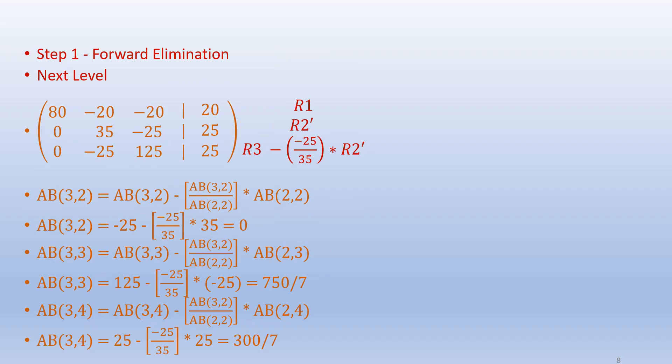In the next level, we want to bring the elements under the second column below the main diagonal to zero. In order to achieve this, we perform the row operations as shown here, and the steps are also given here.